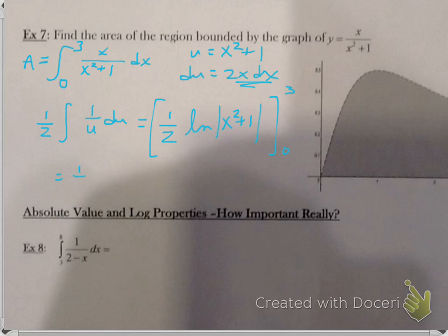We can take the 1 half out. It doesn't really get in our way too much right now. Plug a 3 in, we get ln of 10. Plug a 0 in, we get ln of 1, which is 0. So technically, we can actually get rid of that guy. So what's my final area? 1 half ln of 10.